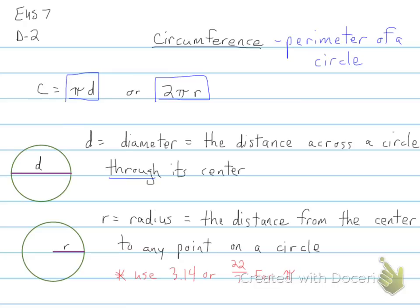And similarly, a radius is the distance from the center to any point on a circle. We will be using 3.14 or 22 over 7 for pi, depending on the situation. But it will always indicate which one you should use and whether you need to round off to the nearest decimal or to the nearest whole number.